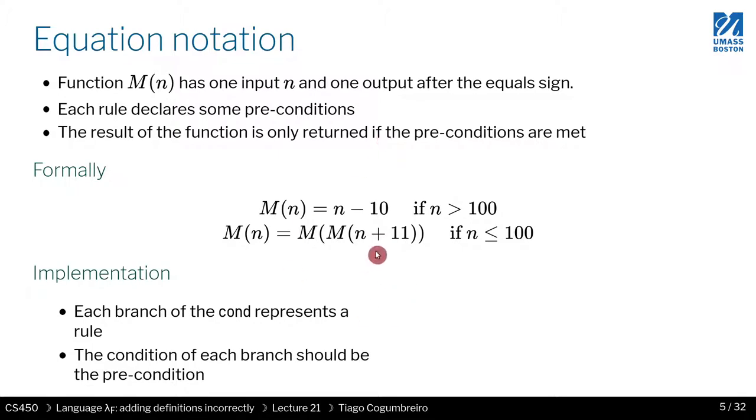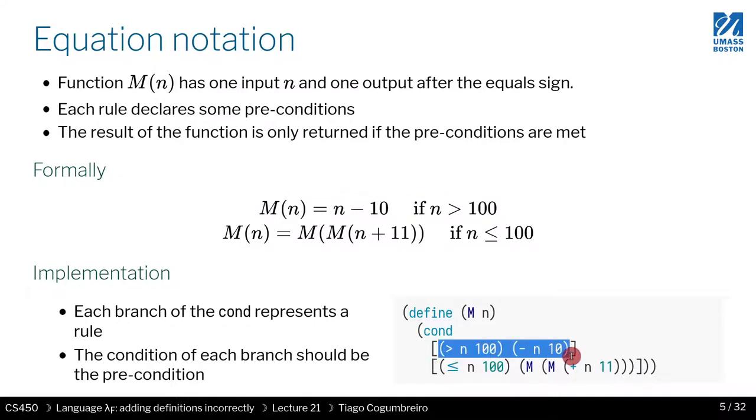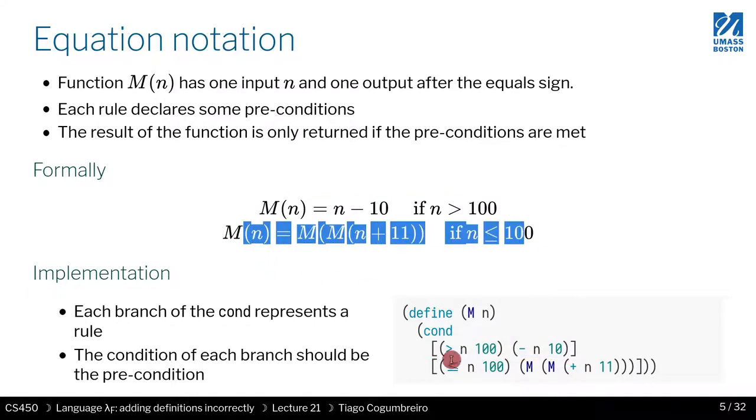The implementation of such notation is very trivial. It maps really well to Racket. What you see here is the conditional. The ifs appear on the conditions of this conditional, so they're the guards of each branch, and the return value is what you see on the right-hand side of the equals. This first line corresponds to this branch, and the second line corresponds to this other branch.